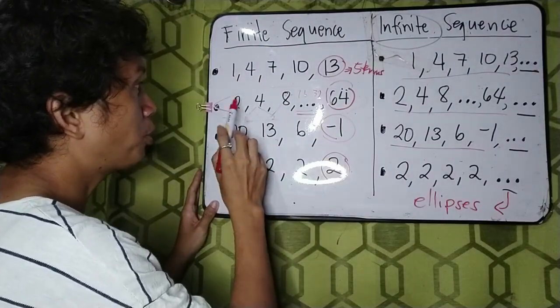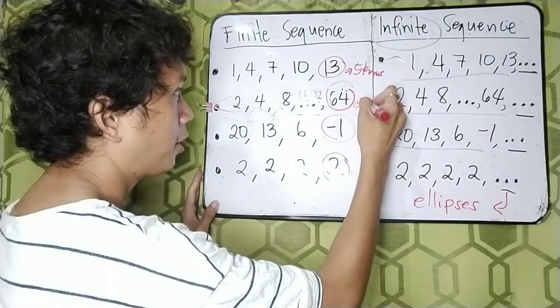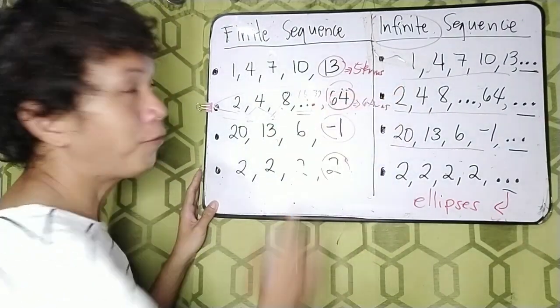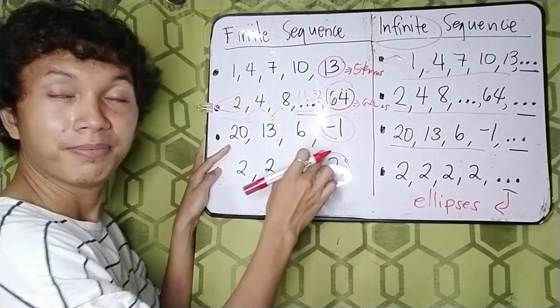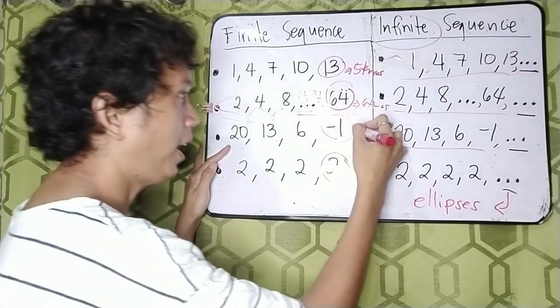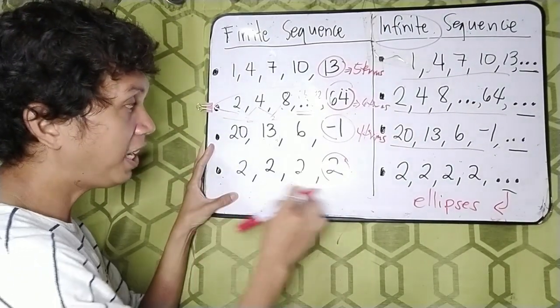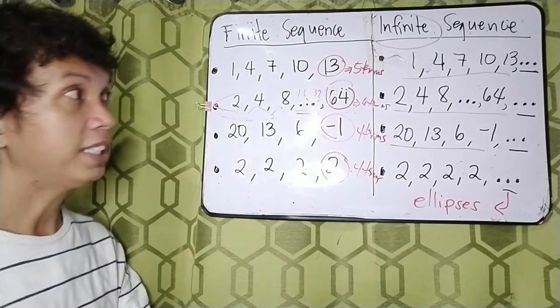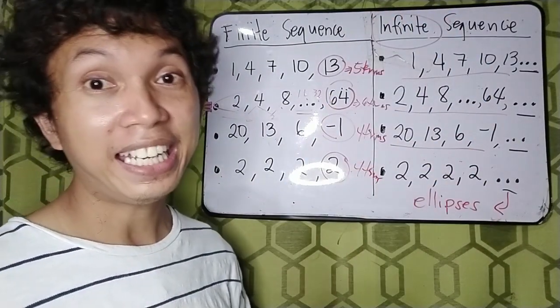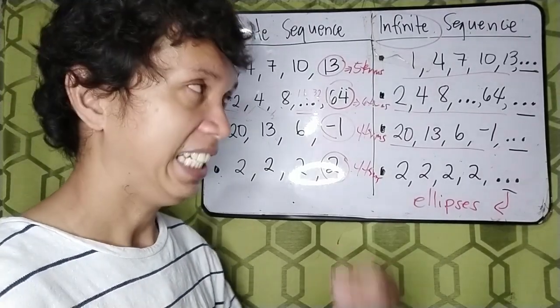And how many terms? 1, 2, 3, 4, 5. There are 6 terms. So meaning, 64 is the 6th term. So here, how many terms? Okay, 4 terms. Very good. How about here? Also 4 terms. But in here, it is infinite. It does not end.